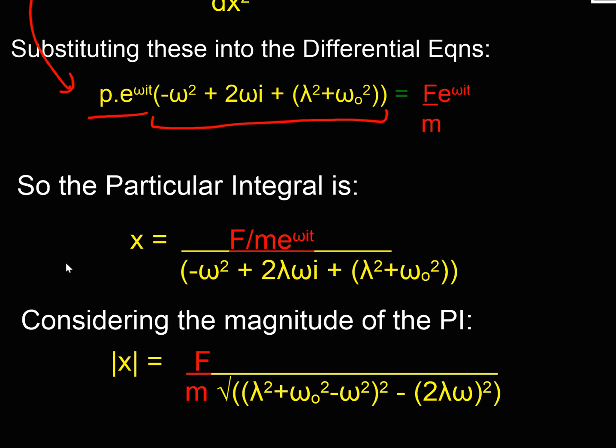My particular integral is this forcing function effect as my magnitude and e^(iωt). On the denominator is my bracket here. I've got -ω² here. I've got 2λωi, so that's a complex term, an imaginary term, and then another real term. So I've got some real and imaginary terms which I can group together.